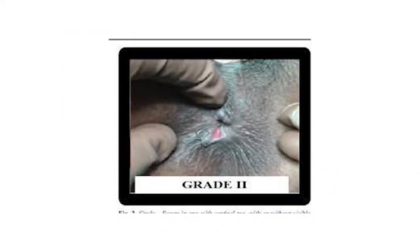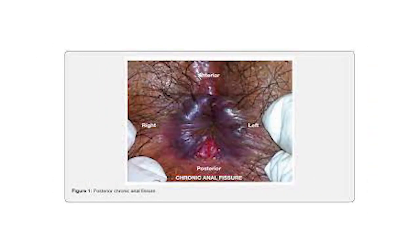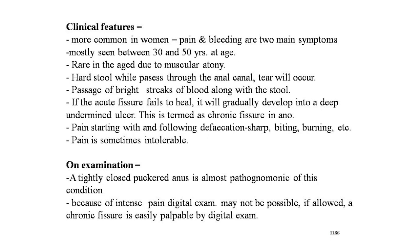Here is a good picture of the chronic fissure. You can see there is a papilla and a sentinel tag. Here is another picture of chronic fissure in ano. Now, the clinical features.